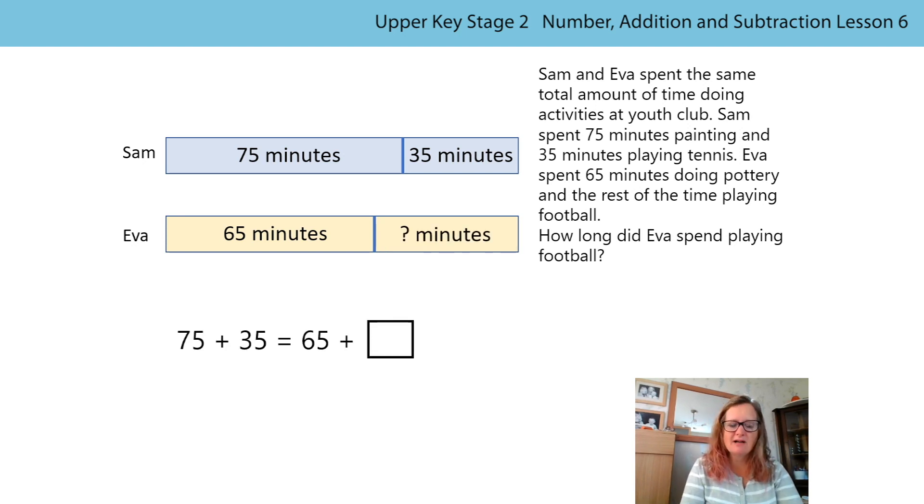Okay, so we can also represent this using our balanced equation, looking for the relationship between the numbers. 75 is 10 more than 65. So 75 subtract 10, what have we got to do to the other addend? That's right, I have to add 10. So if I've subtracted 10 from one addend, I need to add 10 to the other addend. So that means Eva has spent 45 minutes playing football. Not once did we work out the total time spent by either of them. We could have done, then we could have subtracted 65. But it's much more efficient to look at the structure of the numbers and to form yourselves a balanced equation from the information that you have been given.